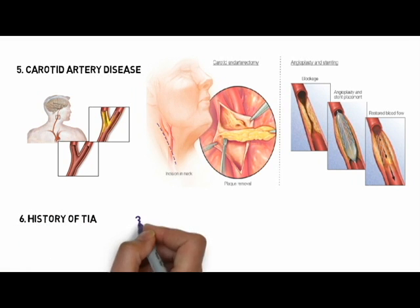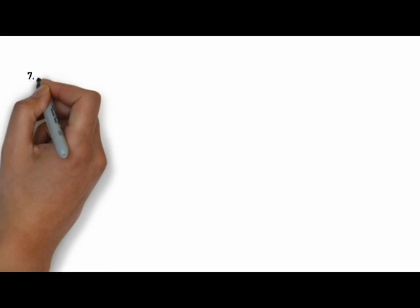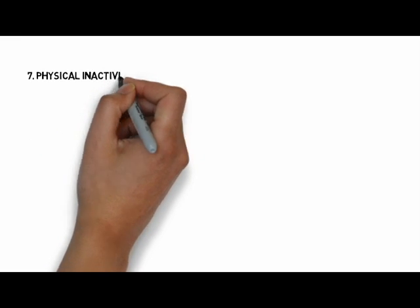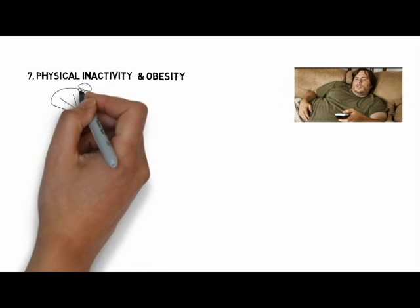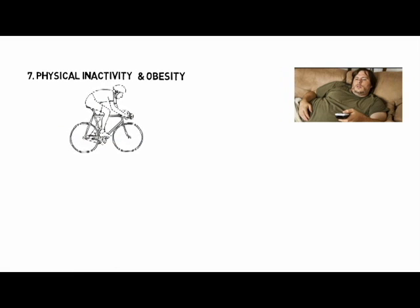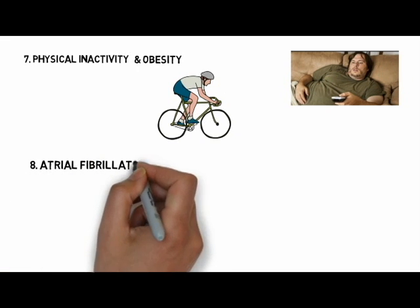Sixth, history of TIA. About 30 percent of strokes are preceded by one or more TIAs, which can occur days, weeks, or even months before a stroke. Seventh, physical inactivity and obesity. Being inactive, obese, or both can increase the risk of stroke. Getting 30 minutes of moderate exercise five days a week can help reduce your risk.